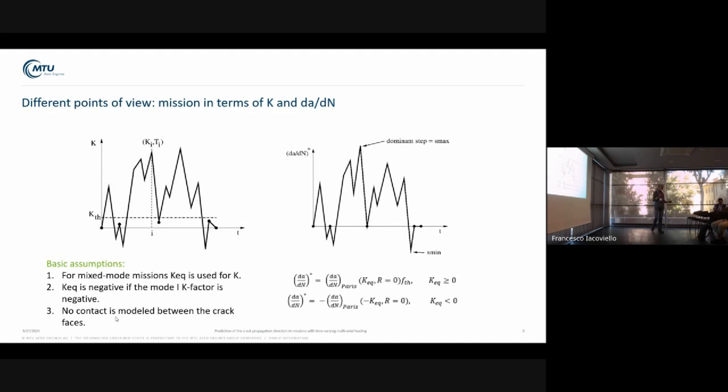However, we have flight missions. We make engines for aircraft. In the flight of an aircraft, temperature is changing all the time. The loading is changing and not in-phase. There are also out-of-phase influences. The basic question is, each of these loading steps leads to a specific crack propagation direction. What is the crack propagation direction of the complete mission?